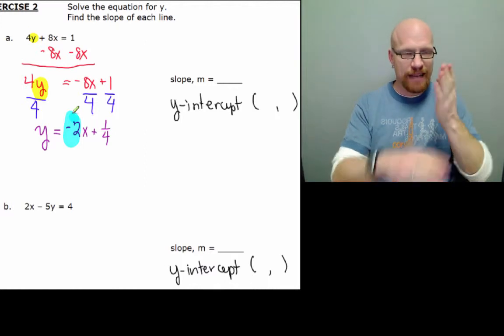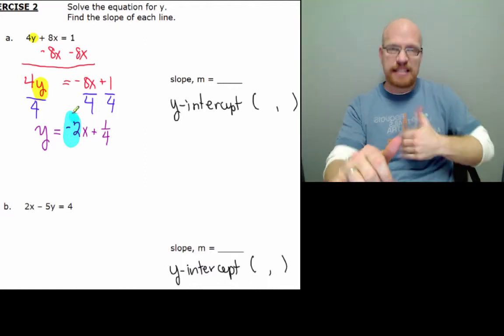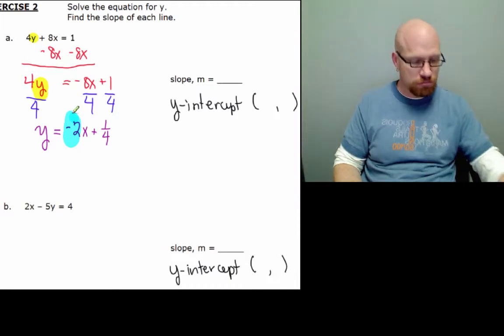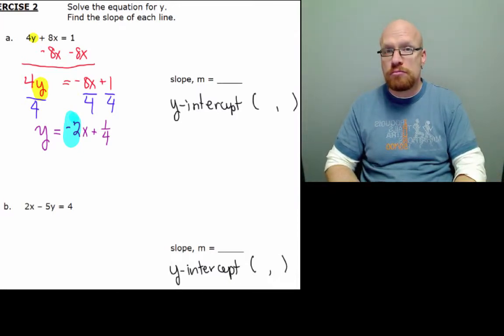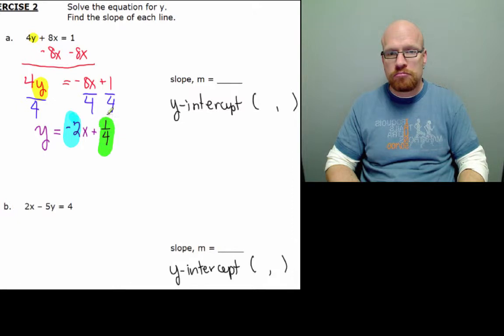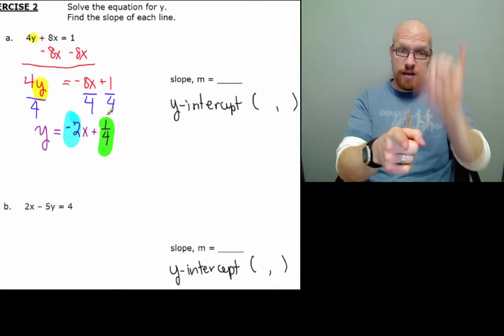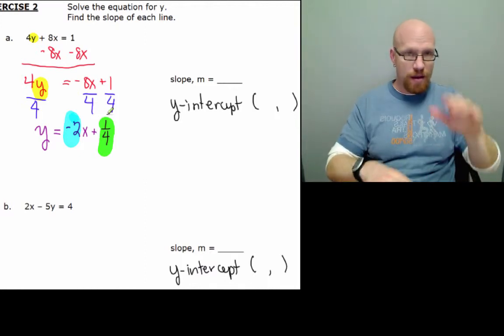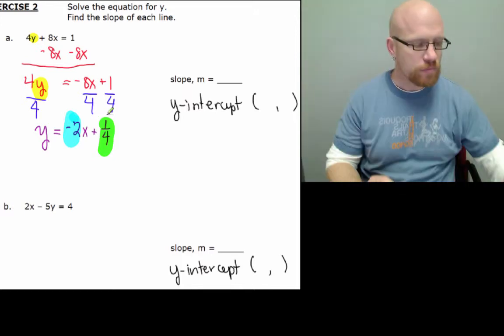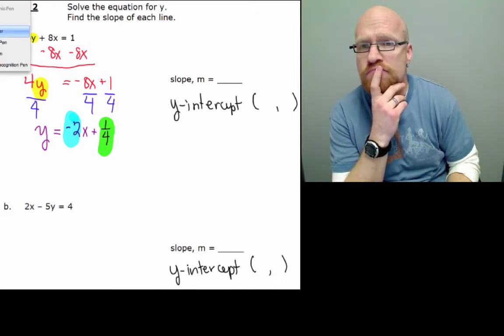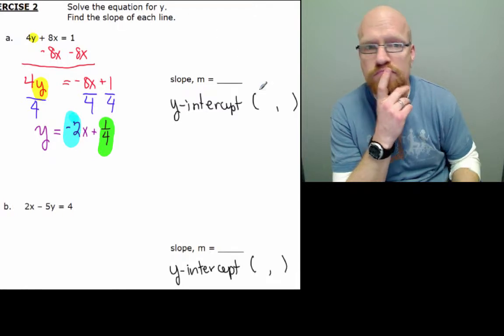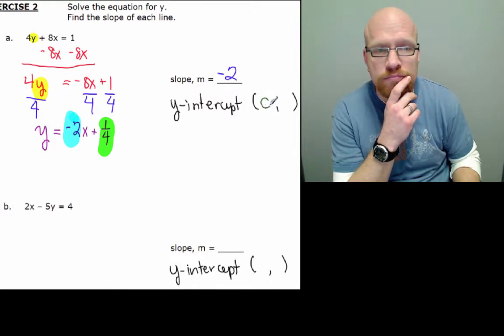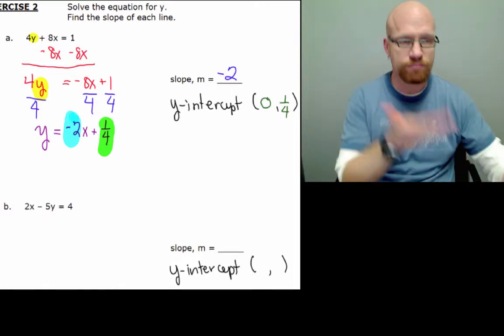In blue, after I fixed it, negative 2, that's my slope. In green, that's my y value for the y-intercept for the graph. Those are our answers.